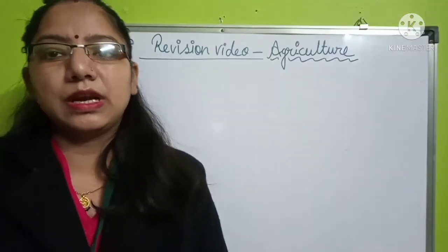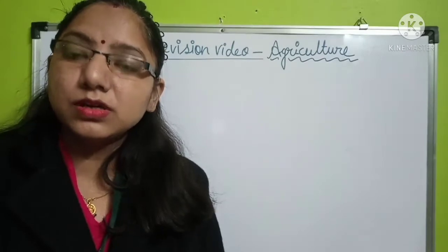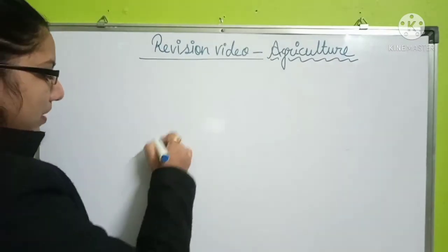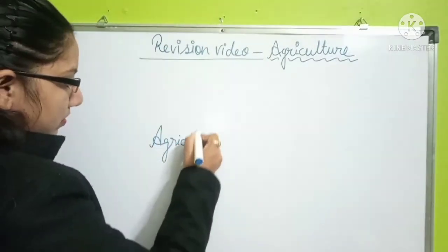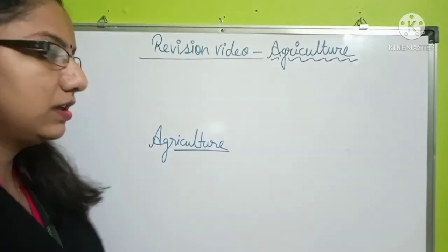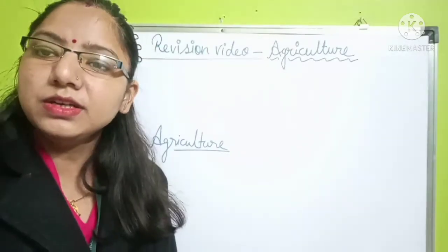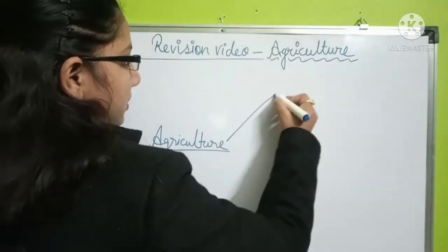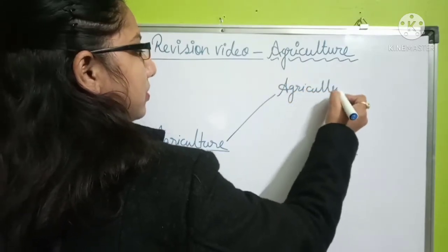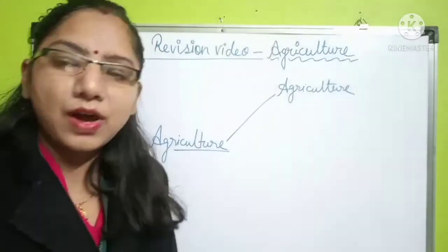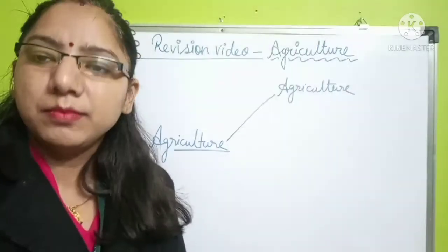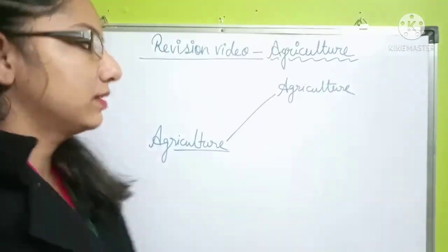There are different types of activities related to agriculture but their names are different. Agriculture itself includes farming and growing crops, as well as animal rearing and many other things.